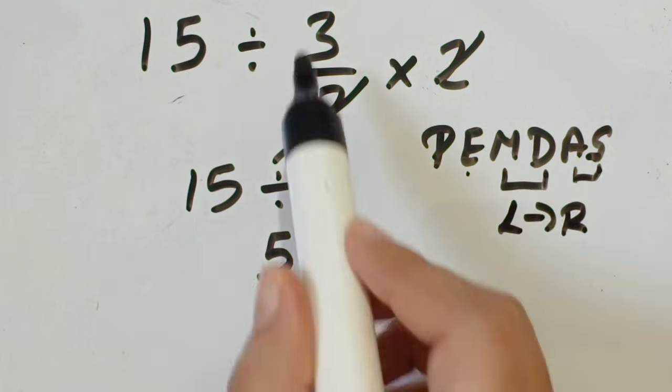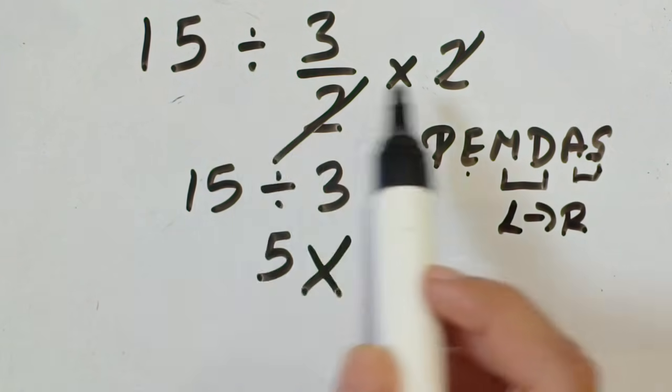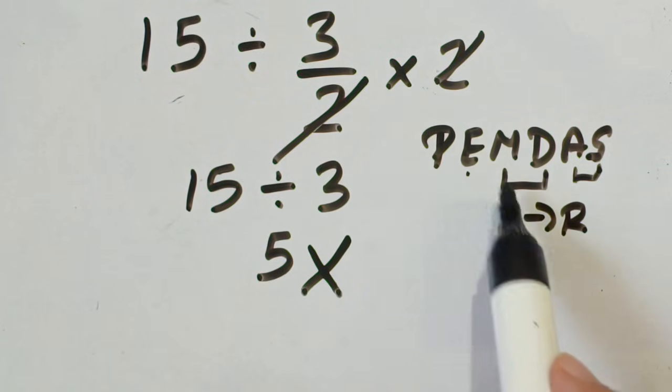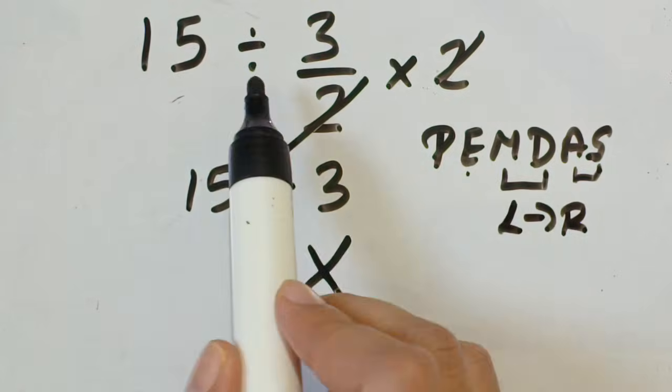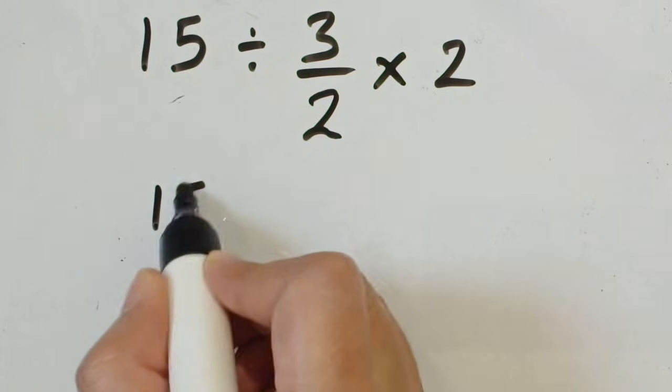First we'll solve this part because division and multiplication are there. As you know, both have equal priorities, therefore we go from left to right. So first, write down 15.